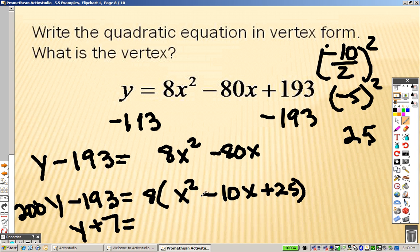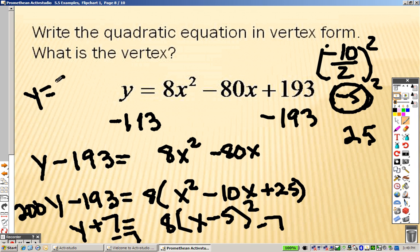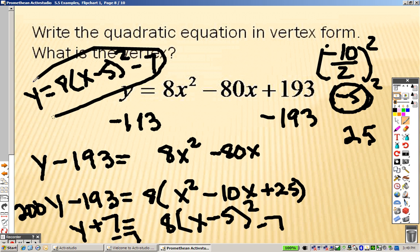And over here, x squared minus 10x plus 25, this, whatever's inside, is your grouping. So, it's a minus 5 squared. Now, I don't want that on that side, so I would have to subtract a 7. So, your official final answer is y equals 8x minus 5 squared minus 7. There's your final answer.